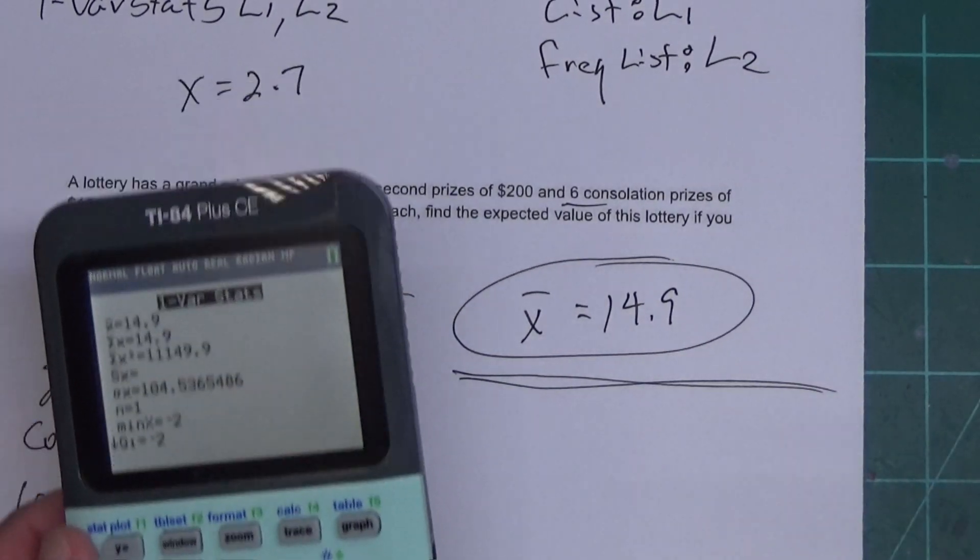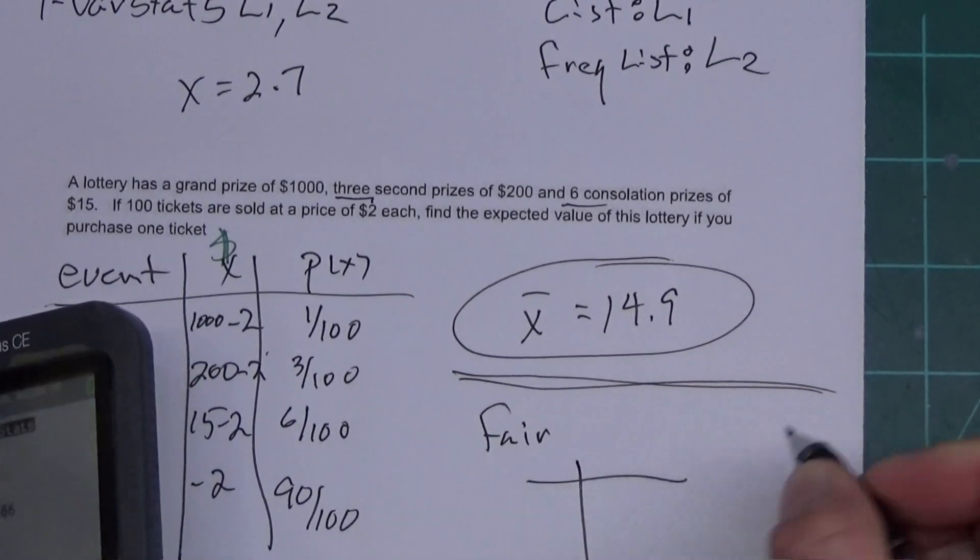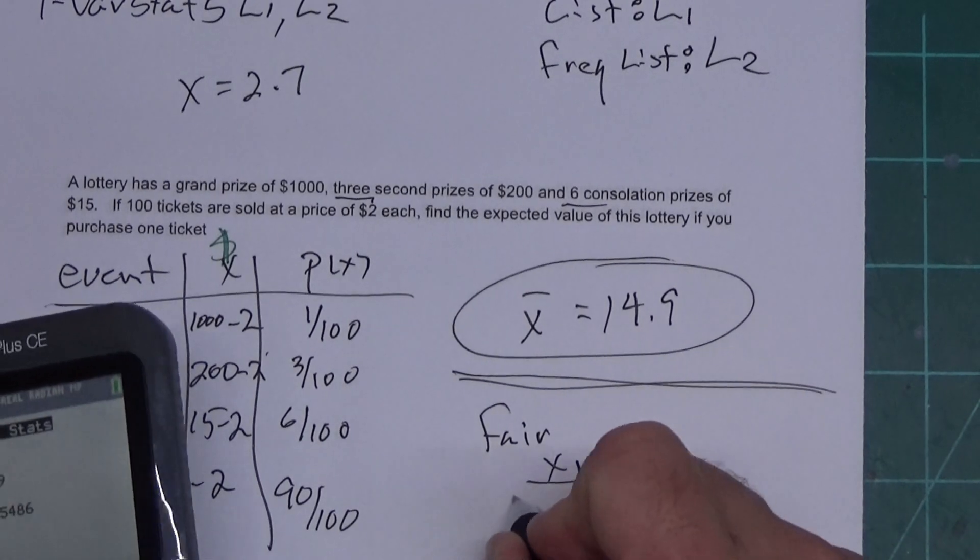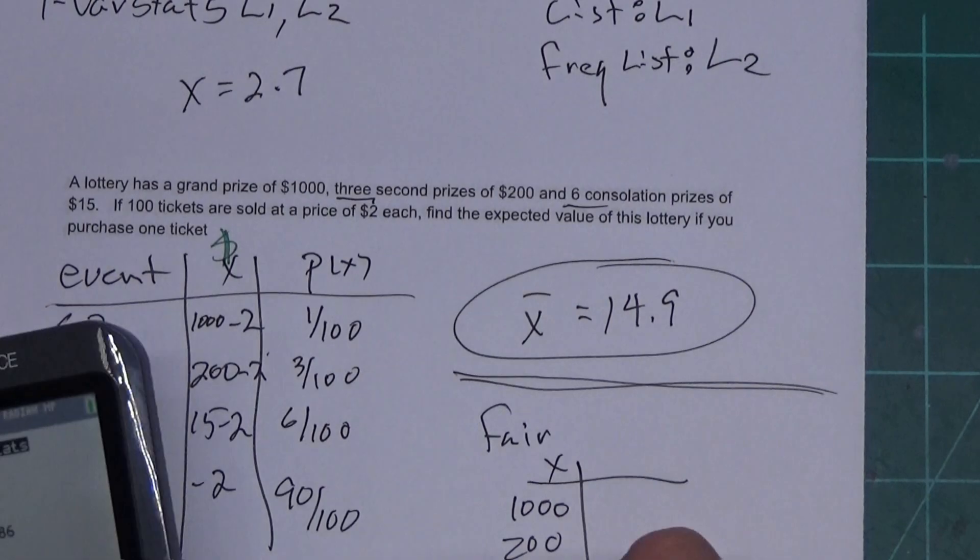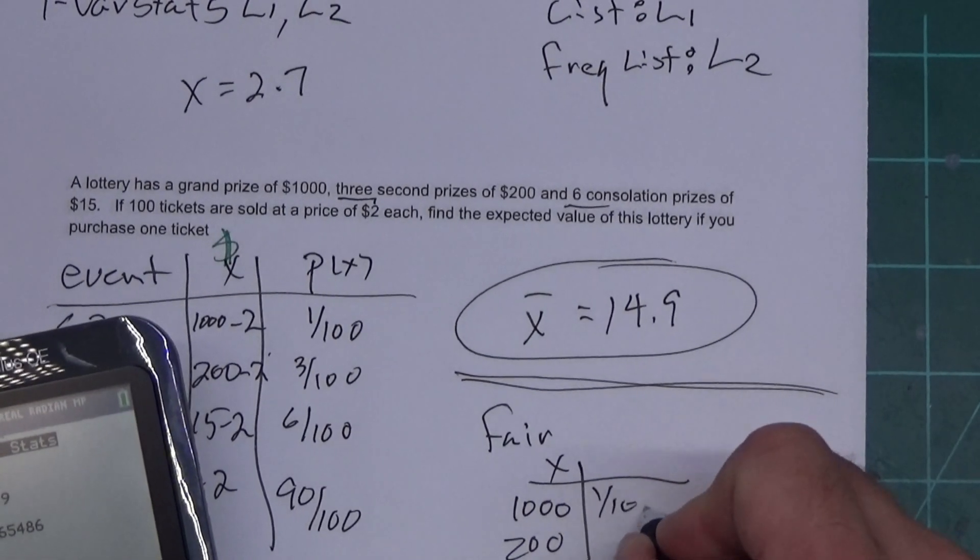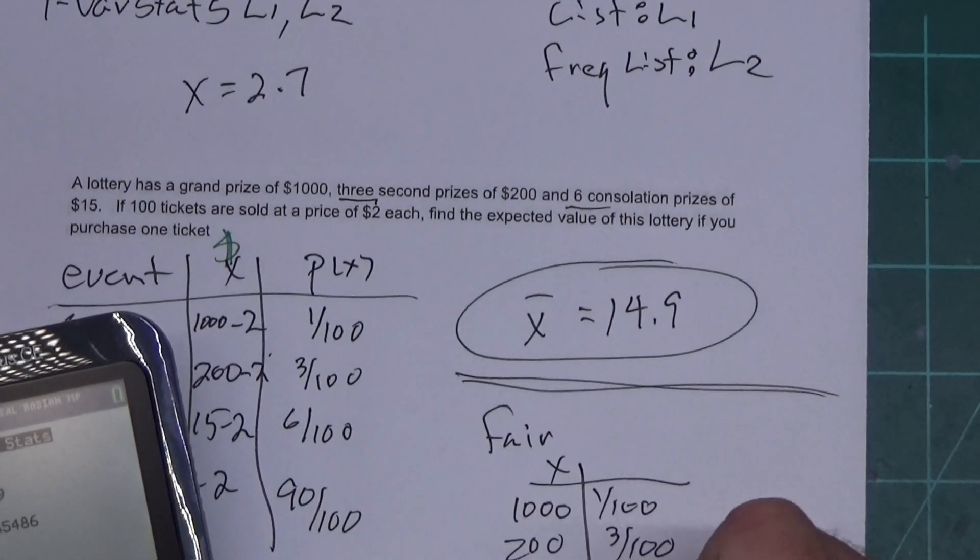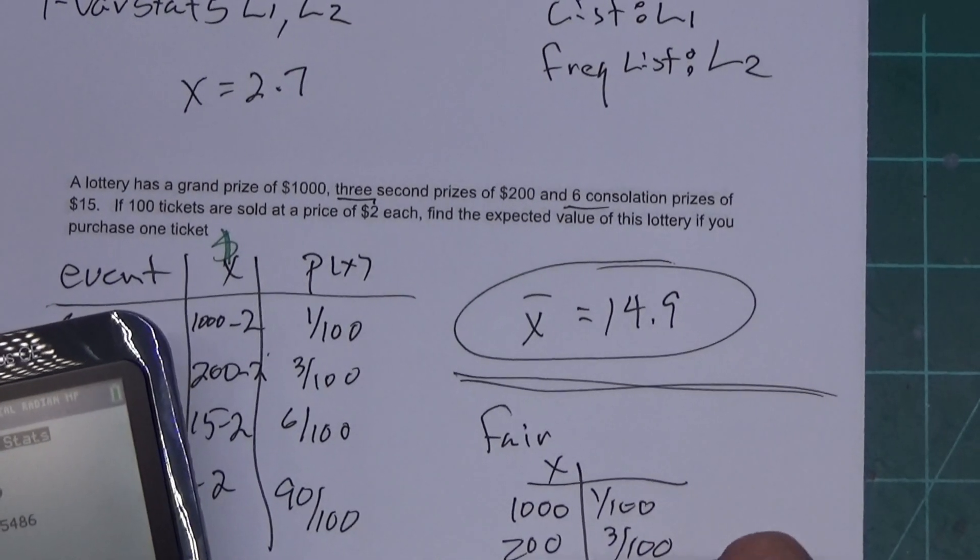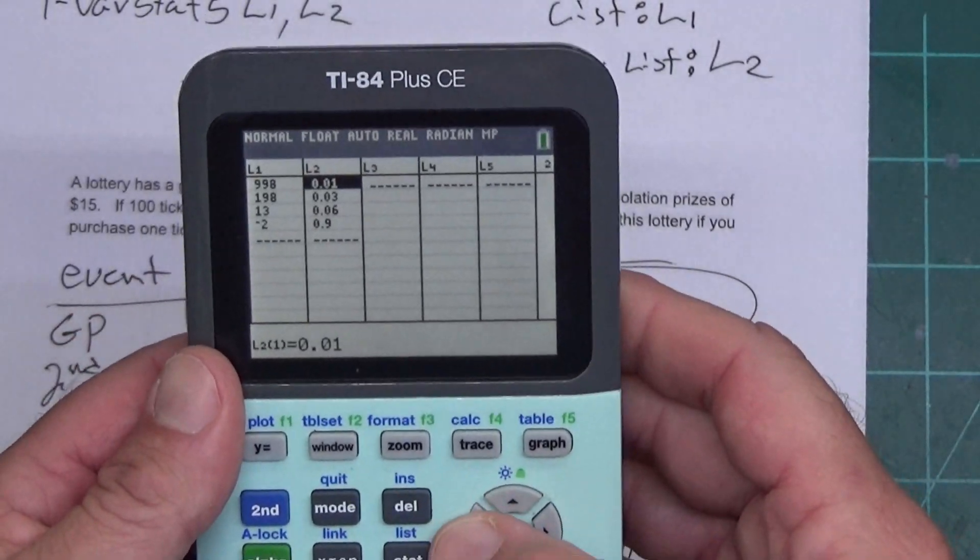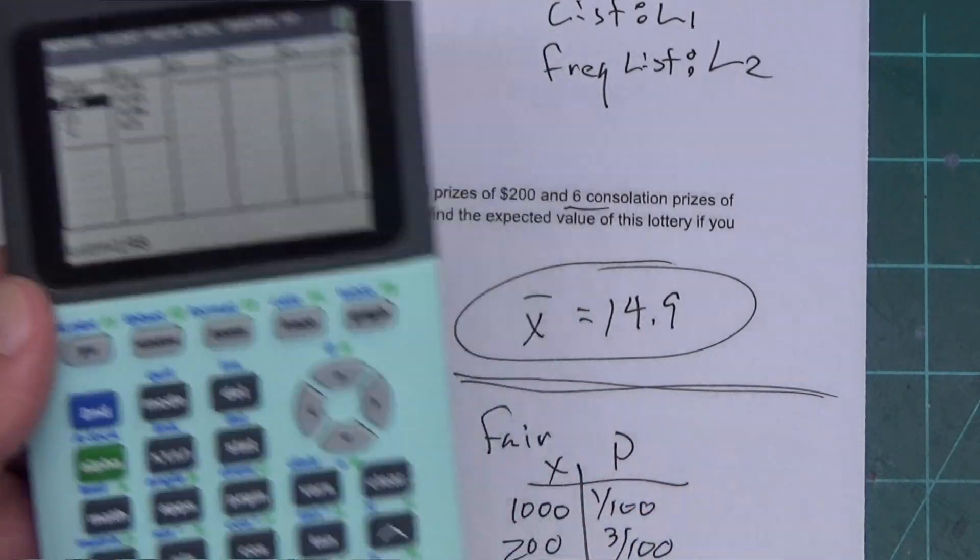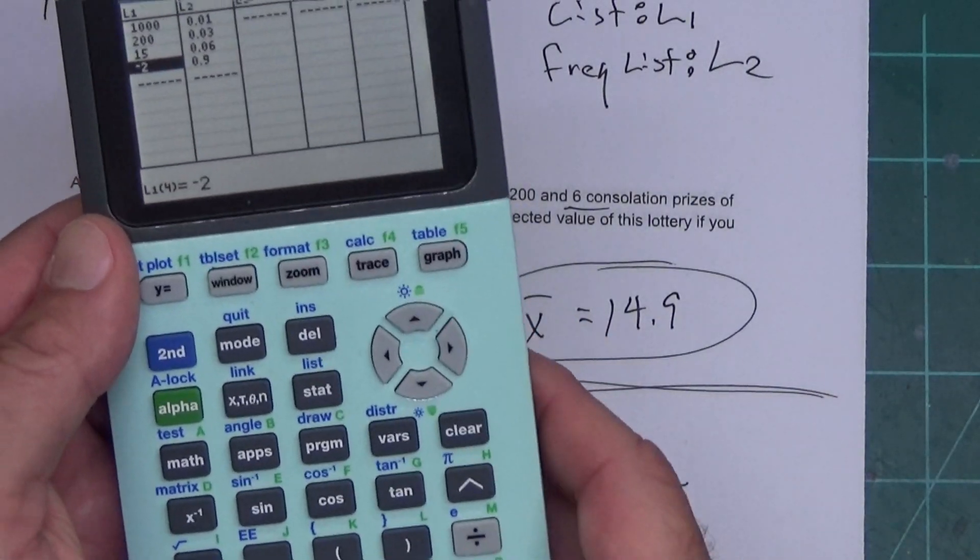Now, how do I figure out how much I should charge for the game to be fair? Well, what we do, and I'm going to cheat a little bit. My X column, I'm just going to make it 1,000, 200, 15, and 0. We're going to leave this 1 out of 100, 3 out of 100, 6 out of 100, and 90 out of 100 for my P. So, I'm just going to press STAT, hit Enter. I'm going to come over here and change this to 1,000, 215, and 0.